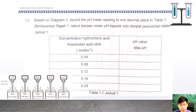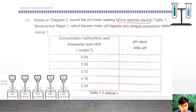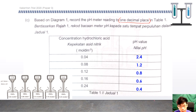Based on the diagram, record the pH meter reading to 1 decimal place in Table 1. You have to round to 1 decimal place. So 2.38 rounds to 2.4. The next readings are: 1.2, 0.82 rounds to 0.8, 0.57 rounds to 0.6, and 0.4 for the last concentration of 0.24 mol per cubic decimetre.